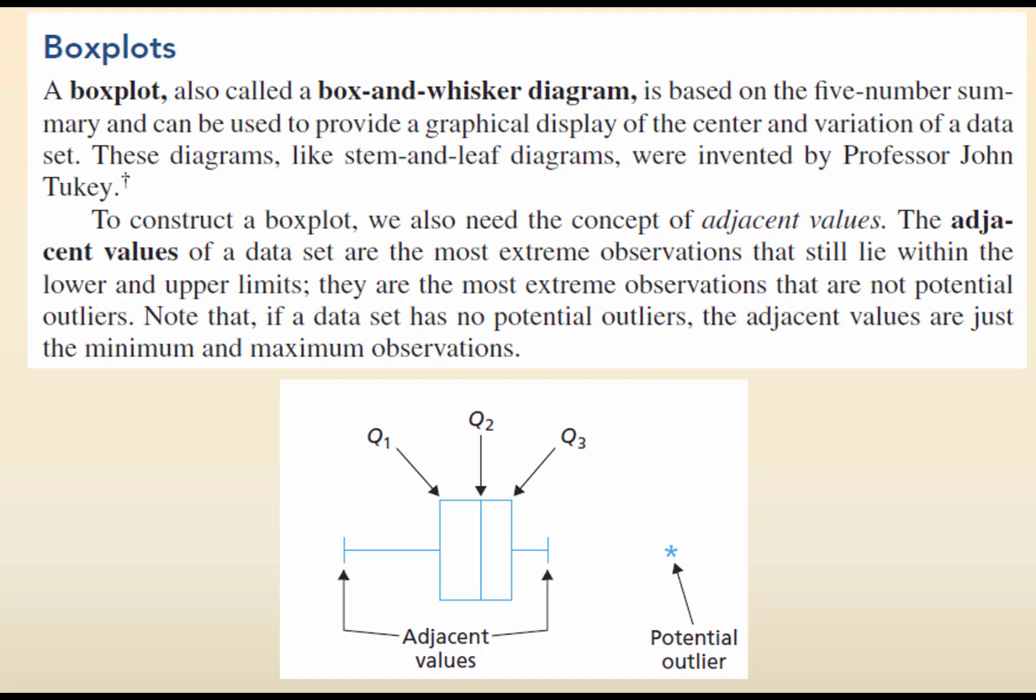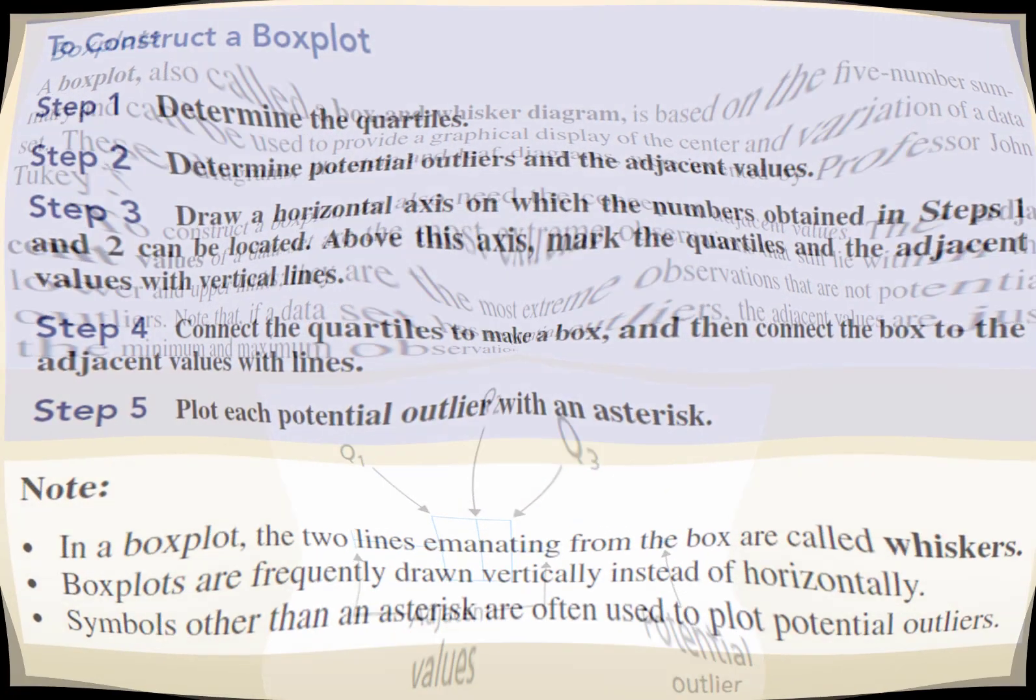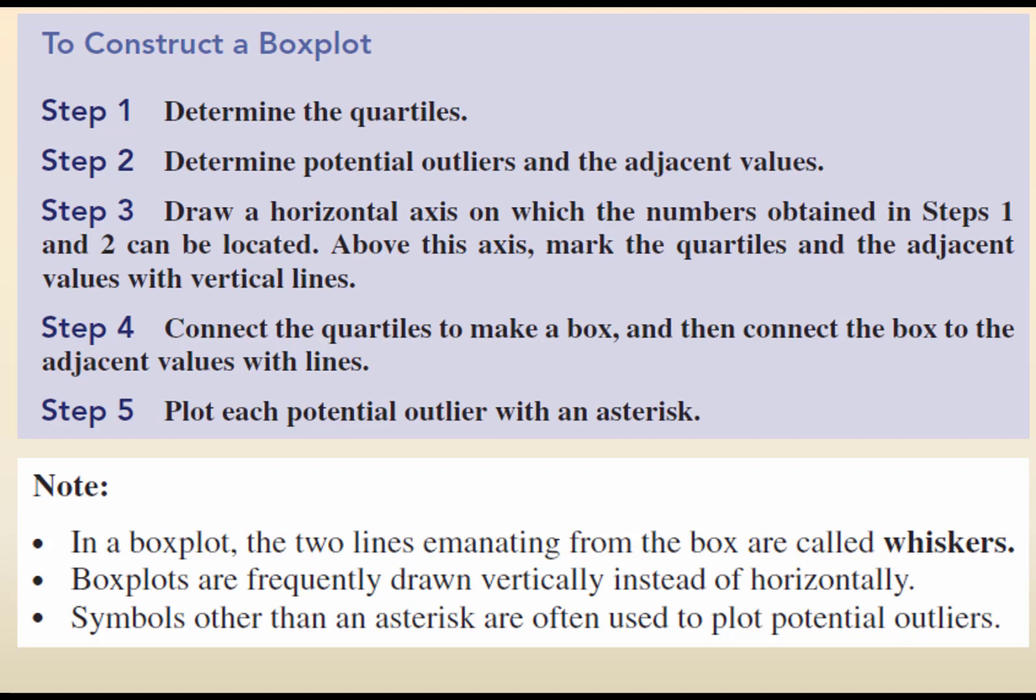Now, if there's no outliers, the adjacent values will be the minimum and the maximum. If there is an outlier, the adjacent point will be the number closest to that outlier.